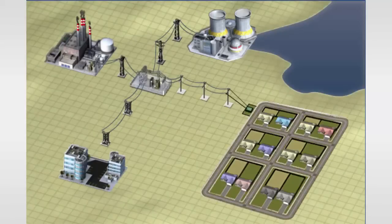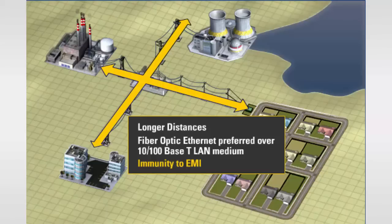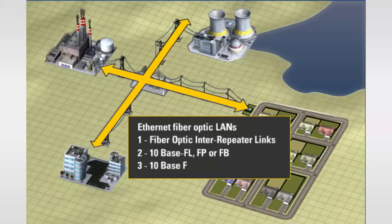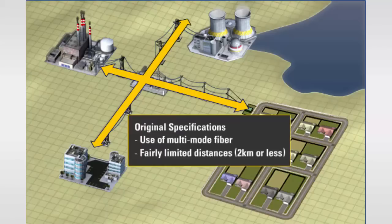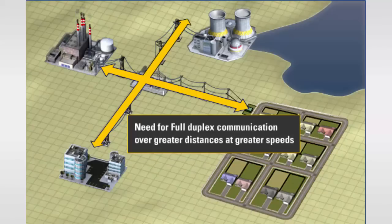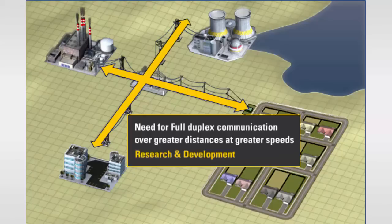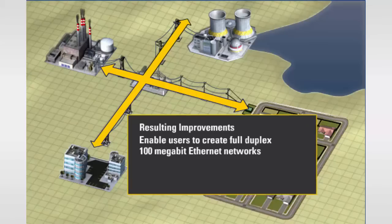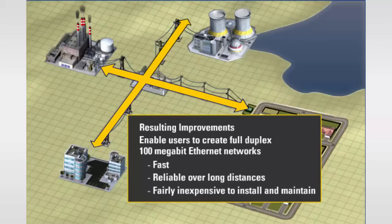In power system applications where longer distances are involved, fiber optic Ethernet is preferred over the more popular 10/100BASE-T LAN medium due to its immunity to EMI. The higher cost and difficulty of terminating fiber cables allows twisted pair to continue to be used where appropriate. Ethernet fiber optic LANs were first referred to as fiber optic inter-repeater links, later changed to 10BASE-FL, FP or FB, and then finally 10BASE-F. The original specifications were based on the technology of the mid-80s, calling for the use of multimode fiber with fairly limited distances of 2 km or less. The need for full duplex communication over greater distances at greater speeds sparked research and development, resulting in full duplex 100Mbit Ethernet networks that are fast, reliable over long distances, and fairly inexpensive to install and maintain.